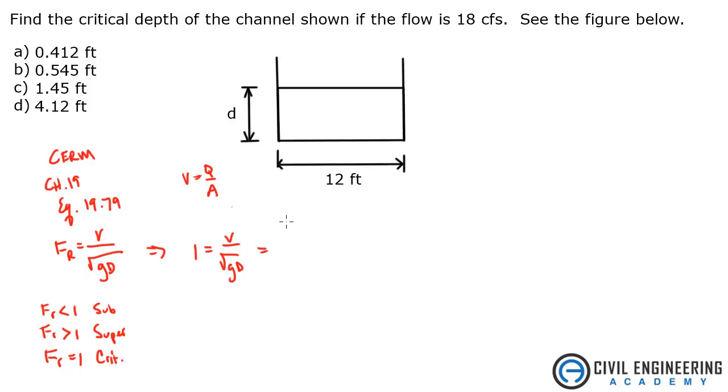Q is given as 18 CSF. And divided by area which is going to be 12 feet times your depth. And that is all divided by G, 32.2 feet per second squared, times D, all raised to the one half.